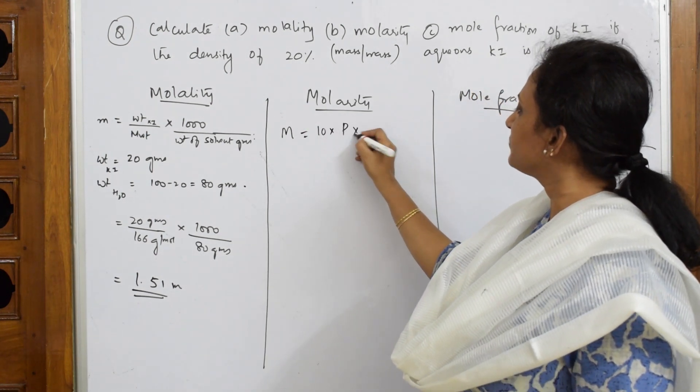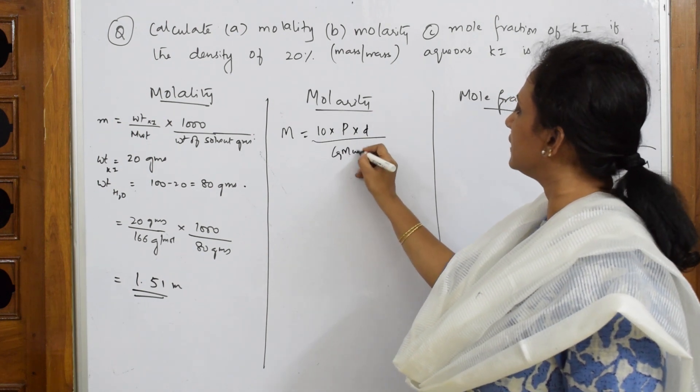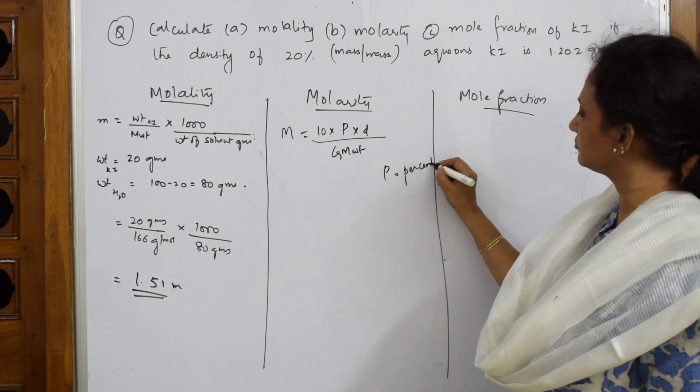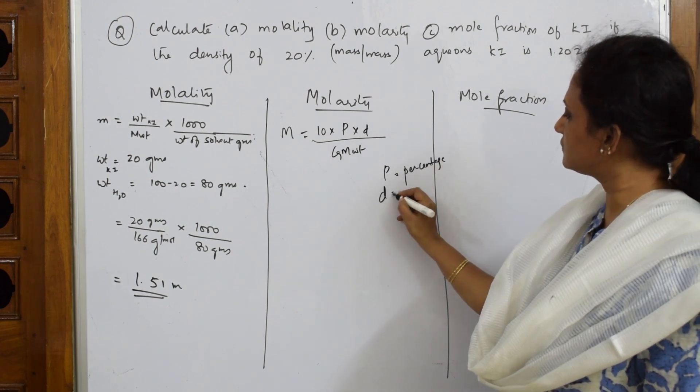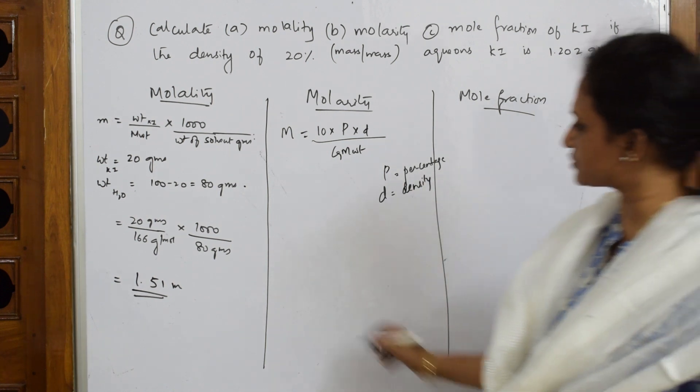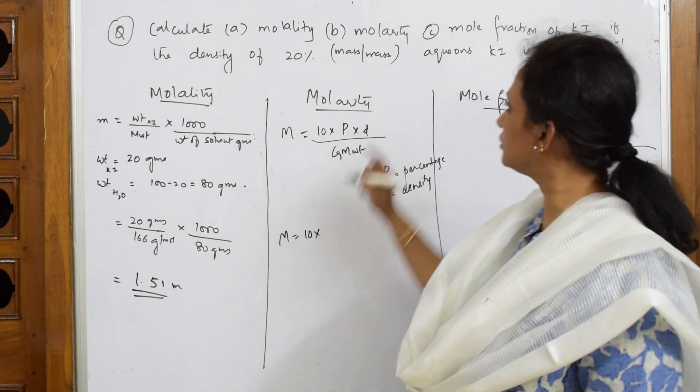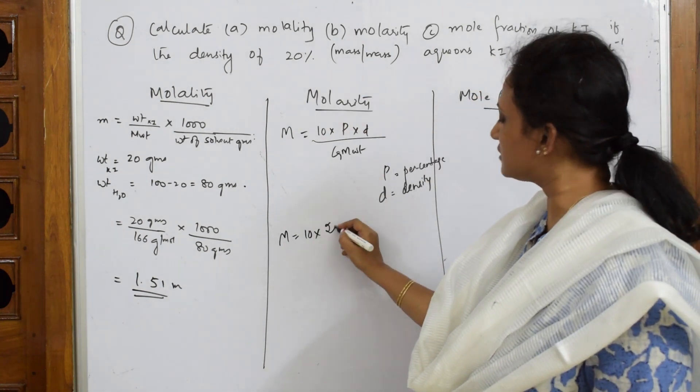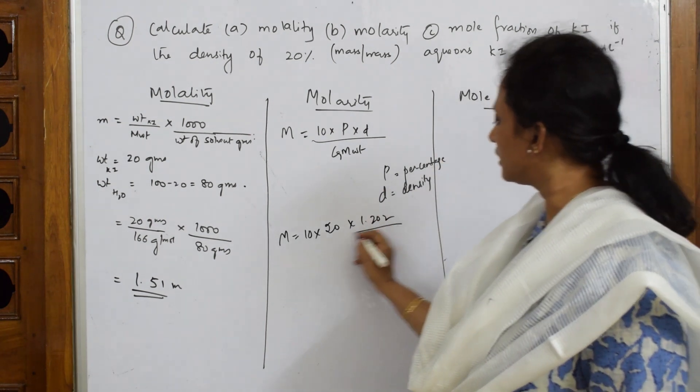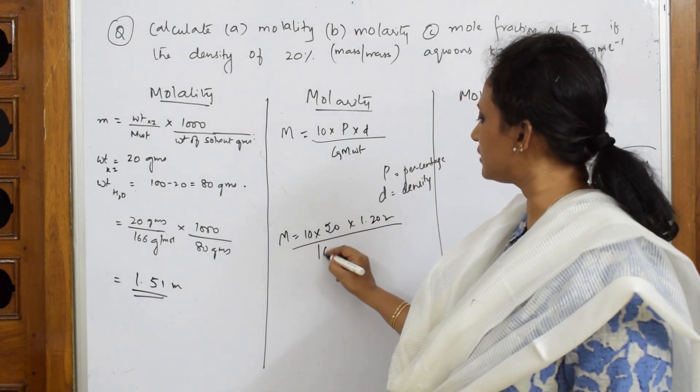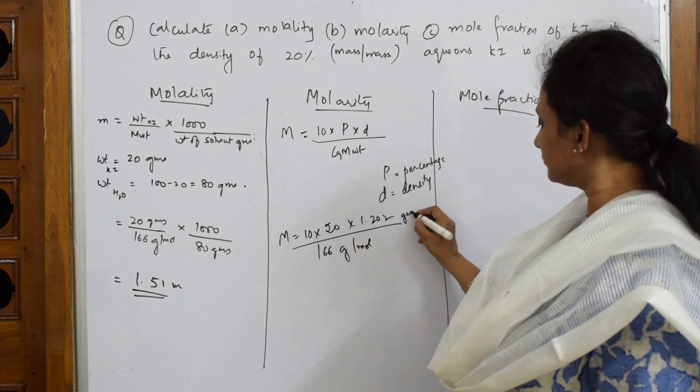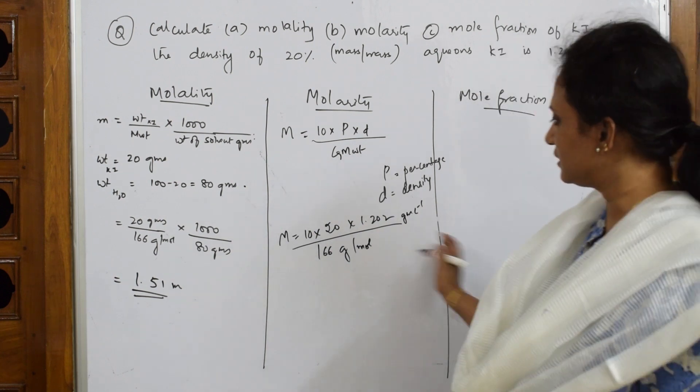10 into P into D by gram molecular weight. What is this P? P is the percentage. D is the density. Directly substitute: molecular weight is equal to 10 into percentage of KI is 20, density given to me is 1.202 divided by gram molecular weight is 166 gram per mole. This is given as gram liter inverse. Density is equal to mass by volume.